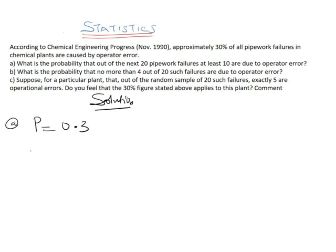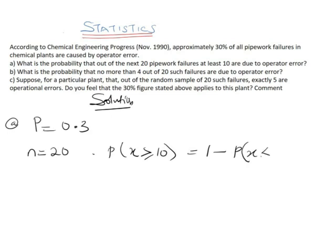For part A, we are asked: what is the probability that out of the next 20 pipework failures, at least 10 are due to operator error? So n = 20, and x is at least 10, meaning we need P(X ≥ 10), which equals 1 minus P(X ≤ 9).